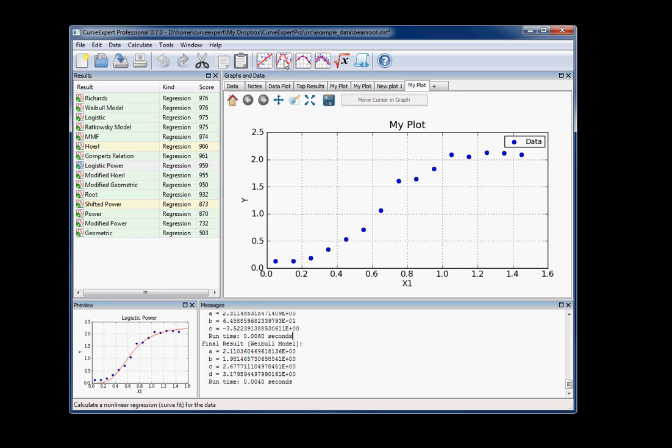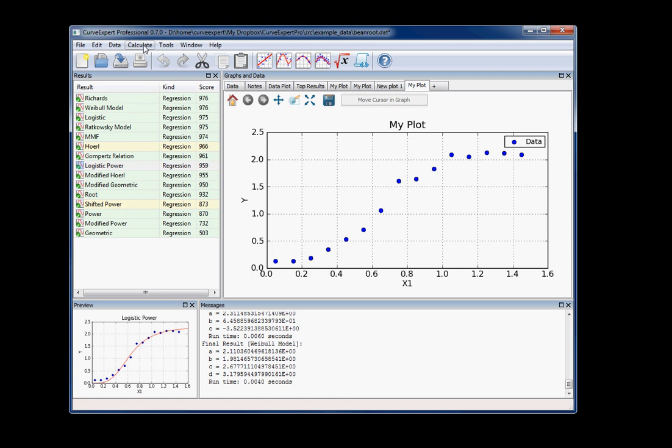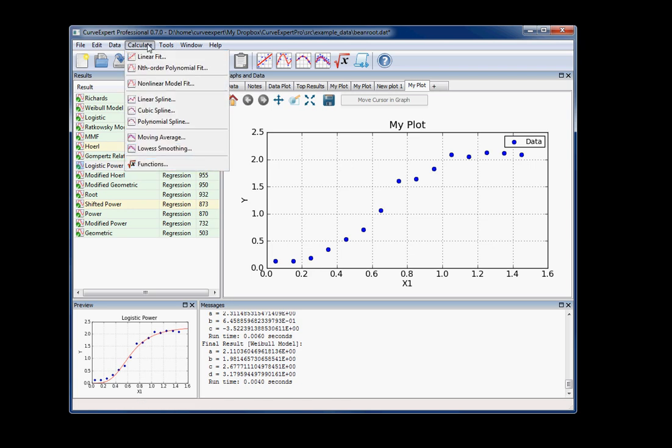The toolbar buttons, you've got, for the calculations anyway, you've got linear regression and non-linear regression, splines and smoothing. And each one of those maps directly to a menu choice off of the calculate menu.